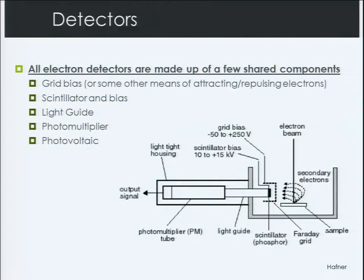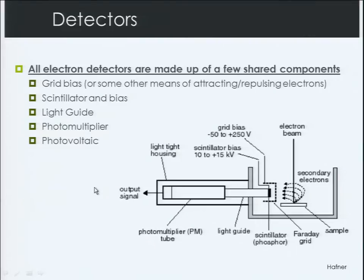Here's a general depiction of a detector — we'll talk about the different components because they all share a few. Typically there'll be a grid bias out front, or some other means of attracting or repelling electrons. Then there'll be a scintillator bias, followed by a light guide, a photomultiplier tube, then some type of photovoltaic and output signal. After this, there could be another amplifier, and then the signal will be sent to your display. If you look at an FESEM, you'll often see the photomultiplier tube and the output signal on some wire hanging off the side of the chamber. You can count how many detectors are on a tool just by quickly glancing at it.